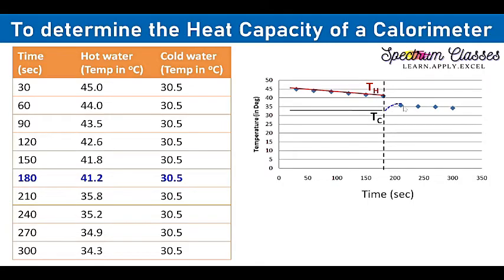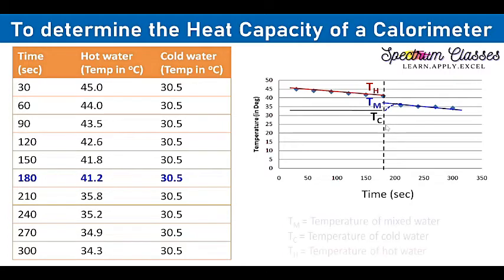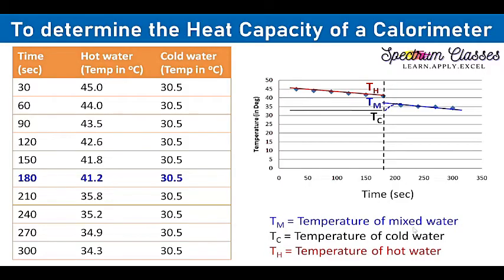Now after mixing we have these points. Most of the time we make a mistake and consider the first recorded point as the temperature of the mixture, but this is incorrect. So just to have the correct value, we need to extrapolate a line through these points, and the point on this extrapolated line at the time of mixing gives us the temperature of the mixture. So these are the temperatures for cold water, hot water, and mixed water.